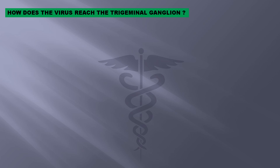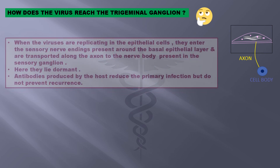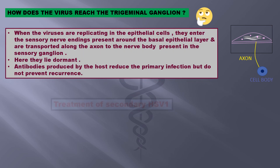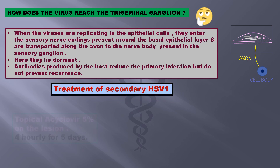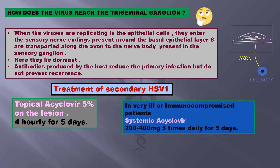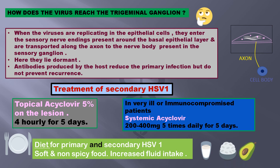How does the virus reach the trigeminal ganglion? When viruses are replicating in the epithelial cells, they enter the sensory nerve endings present around the basal layer and are transported along the axon to the nerve body present in the sensory ganglion, where they lie dormant. Antibodies produced by the host cells reduce the primary infection but do not prevent recurrence. Treatment for secondary infection is topical acyclovir 5% on the lesion every four hours for five days. In very ill or immunocompromised patients, systemic acyclovir 200–400 mg five times daily is given for five days. A soft, non-spicy diet and increased fluid intake is advised for both primary and secondary HSV type 1.